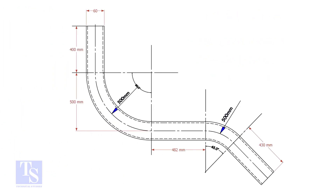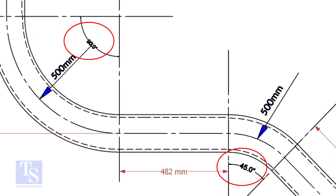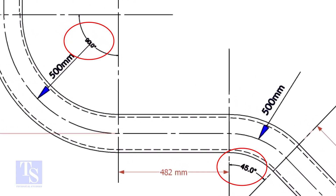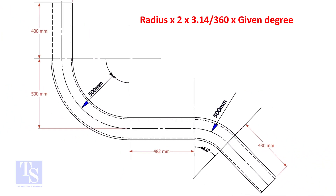In our drawing, there are two bends: one is 90 degrees and the other one is 45 degrees. Let us calculate the pipe length for the 90-degree bend. The formula is: radius multiplied by 2, multiplied by 3.14, divided by 360, multiplied by the required degree.